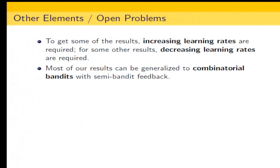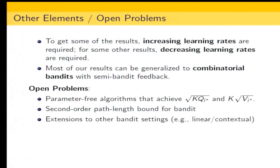To conclude, some results require increasing learning rates and some require decreasing learning rates. Most of our results can be generalized to combinatorial bandits with semi-bandit feedback. We present some open problems: achieving parameter-free algorithms for these bounds, whether second-order path length bounds are possible in the bandit setting, and extensions to other bandit settings.